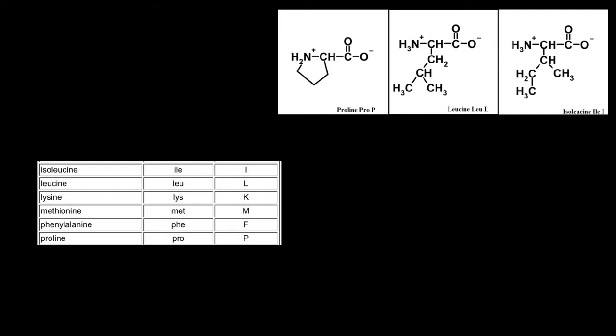Methionine is very easy to memorize. Only one amino acid starts with M. So the first three letters come from the name of the amino acid, and the one letter abbreviation is just going to be M.